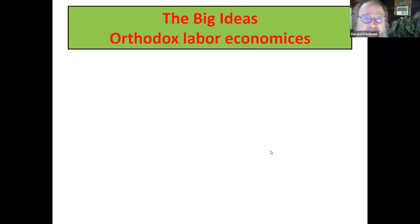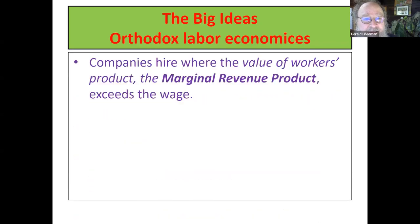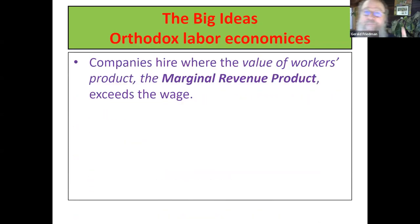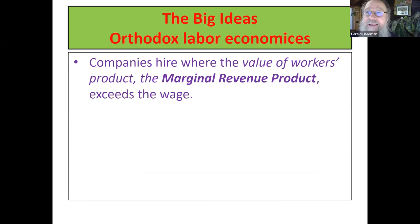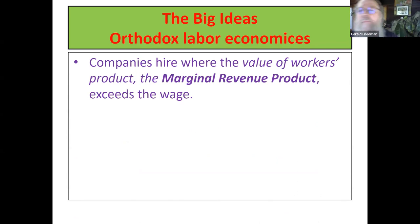Various stuff to do. Big ideas in orthodox labor economics: companies hire where the value of the worker's product — the marginal revenue product of labor — exceeds the wage. So they hire up to the point where the marginal revenue product, the value of what that marginal worker is producing, equals the wage. You hire right up to that point.